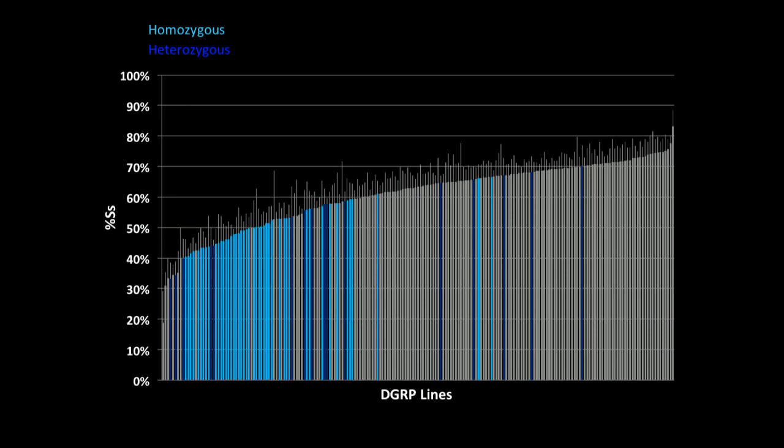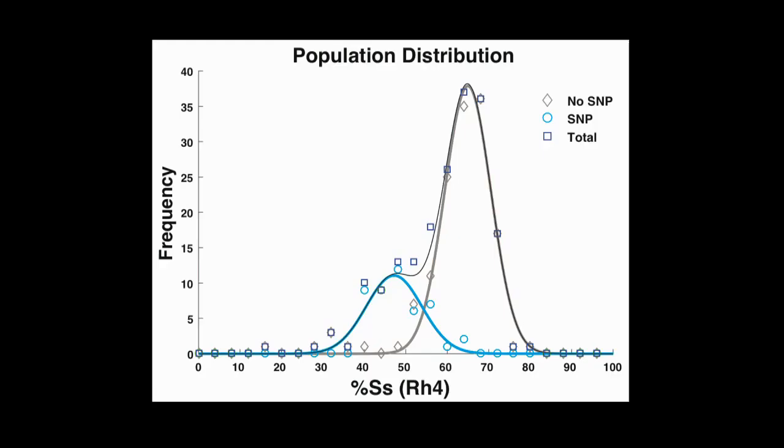So if I map that SNP onto the graph I just showed you, it's predominantly in lines with low spineless expression. As you can see by the light blue bars, these are lines that are homozygous. So we've creatively named it the low spineless SNP.